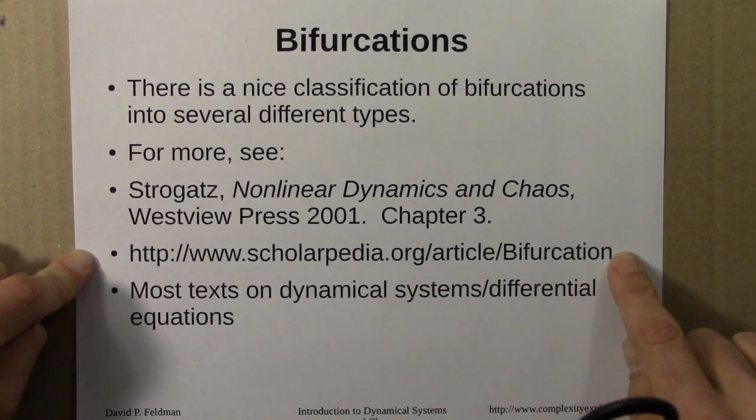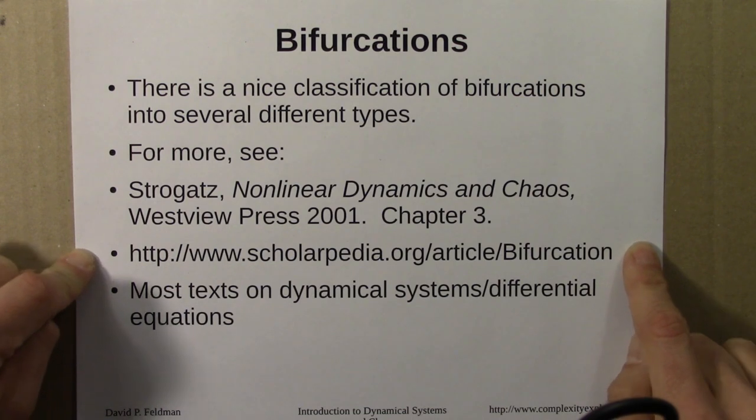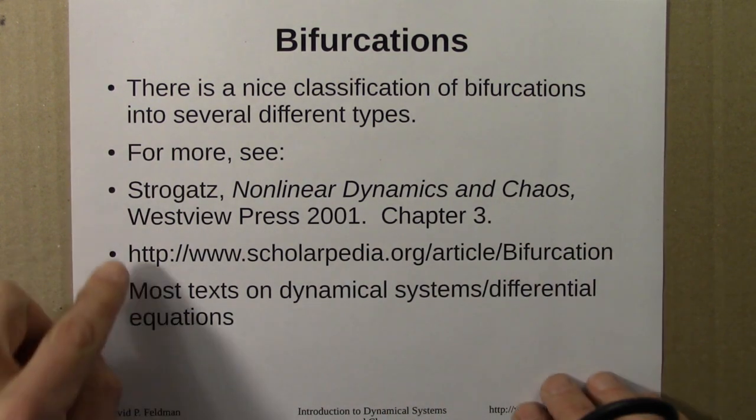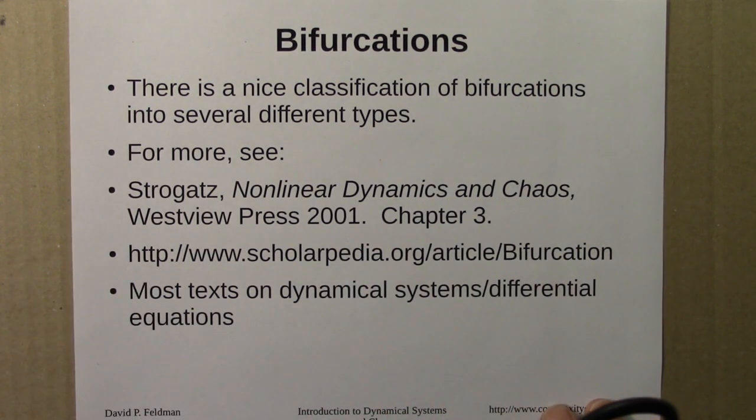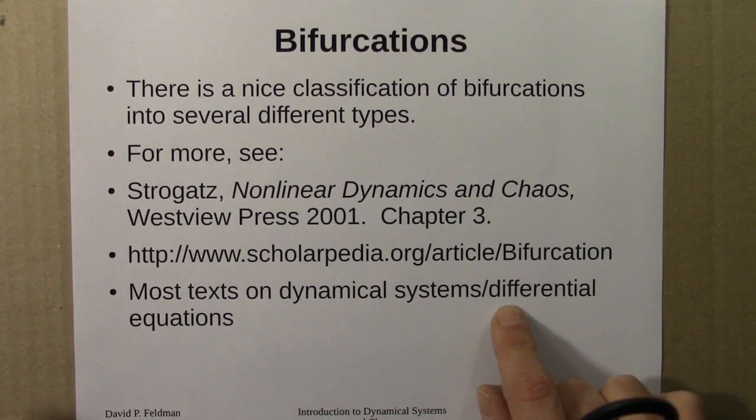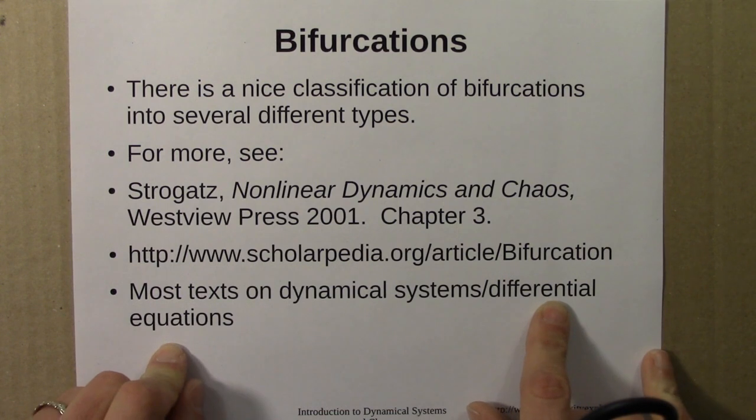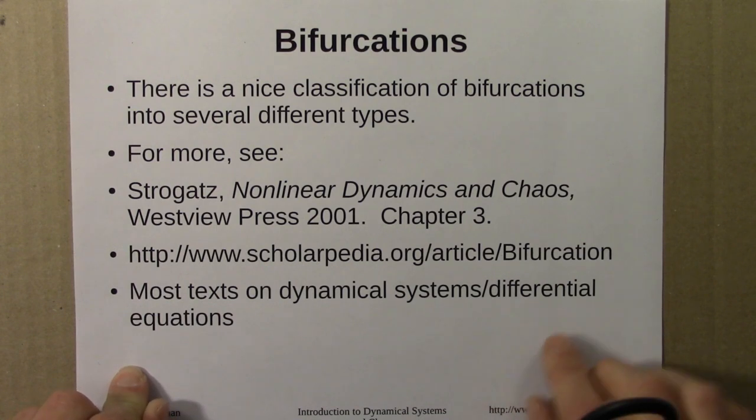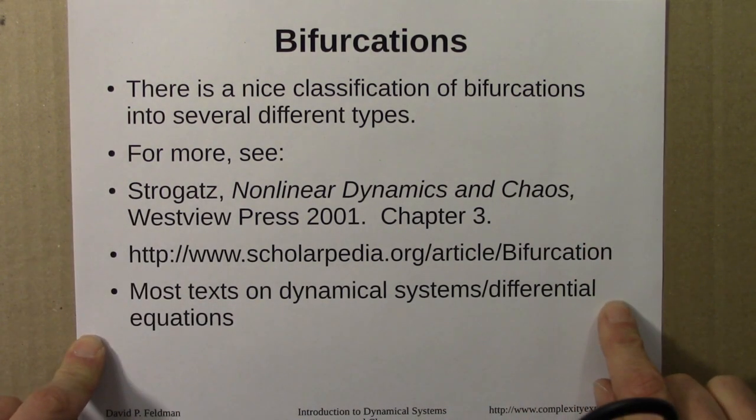Scholarpedia has a pretty good set of pages on bifurcations. Wikipedia's pages are good as well. I think Scholarpedia might be a bit more readable. This is a standard topic, so most texts on dynamical systems or differential equations would have some discussion of bifurcations. There are lots of other places you can go to dig deeper into this phenomenon of bifurcations and bifurcation diagrams.